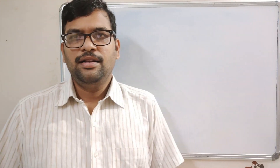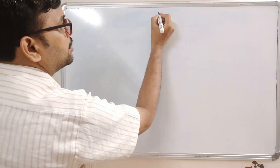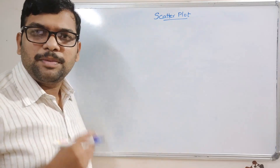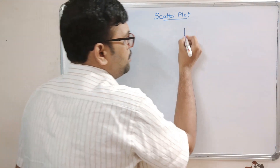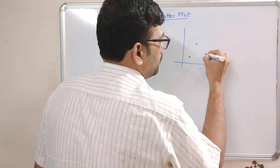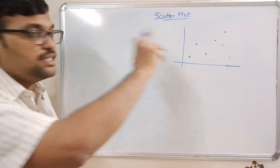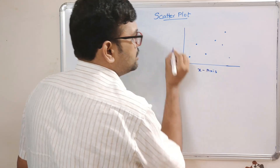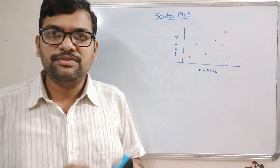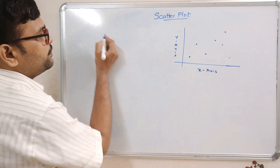Welcome back to our channel. In today's session we'll see one more concept in matplotlib - the scatter plot. A scatter plot is used to represent each and every point without any lines. For example, along the x-axis and y-axis, points will be represented only without the lines.